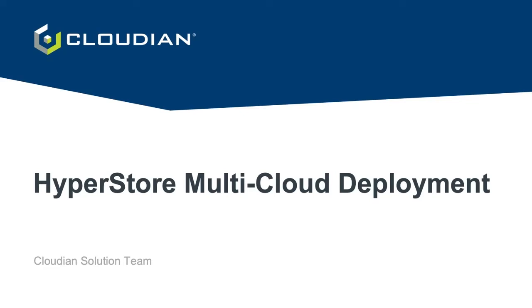In this series of demos, we'll be covering how Cloudian are innovating around multi-cloud with our HyperStore object storage platform. First, there is an overview of Cloudian HyperStore in a multi-cloud environment and how it can be deployed. Then we take a closer look at storage policies and how replication and erasure coding can help protect your data. Then we explore data movement via tiering and cross-system or cross-region replication to cloud destinations outside of HyperStore. Finally, we look into how on-prem integration works with a multi-cloud deployment.